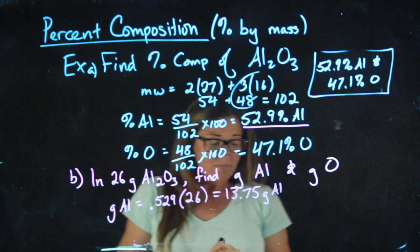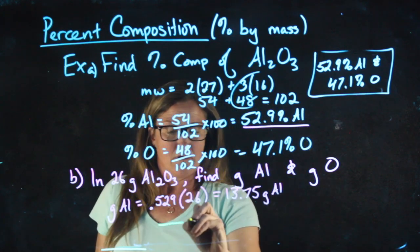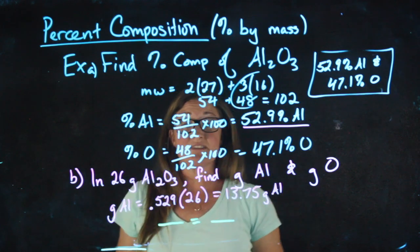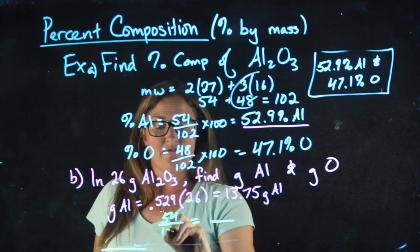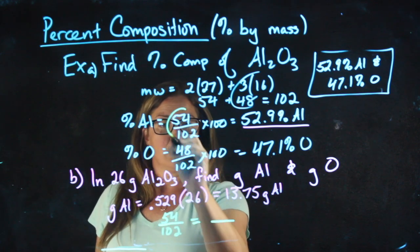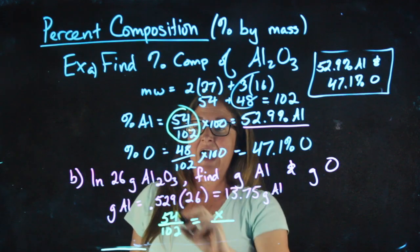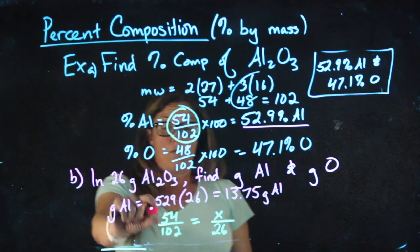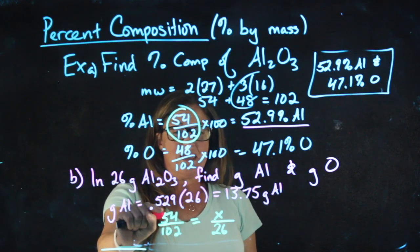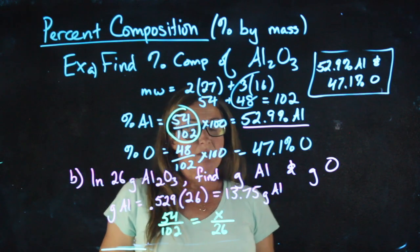Alternatively, some people like to set it up as a proportion where you have molecular weights on one side and grams on the other. I know that 54 out of every 102 is aluminum. So how much out of 26 grams is aluminum? 54 over 102 equals 0.529. So this mathematically is doing the same thing that that is.